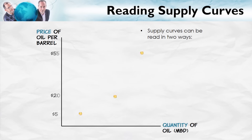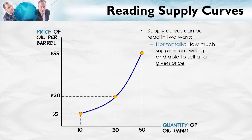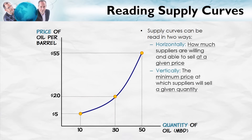Here comes our supply curve, just as before. The horizontal reading tells us the quantity supplied at each price — in other words, how much suppliers are willing and able to sell at each price. At a price of $20 per barrel, suppliers are willing and able to sell 30 million barrels of oil per day.